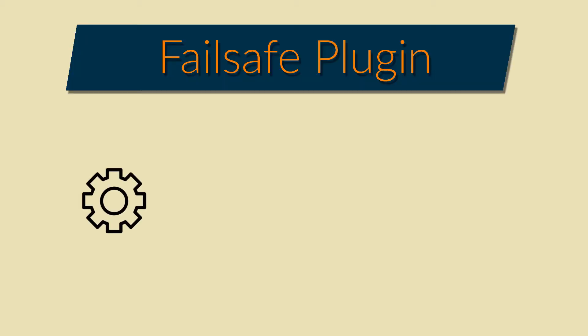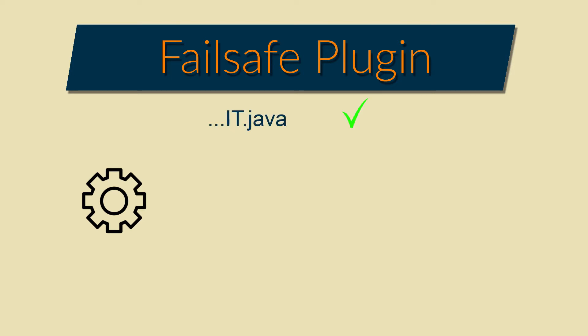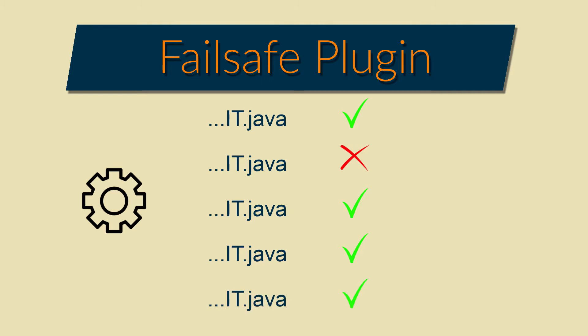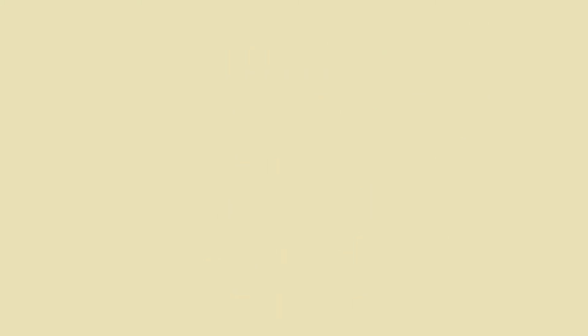On the other side, the Failsafe plugin will be used to run the integration tests. Because it will run all the integration tests and list the result at the end. And if even a single integration test fails, the Maven build will end with an error code. This is a separated goal that I may or may not add.